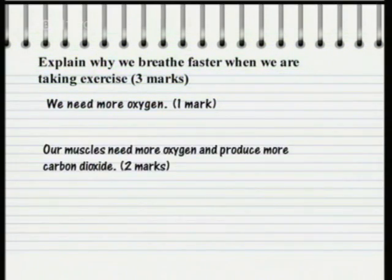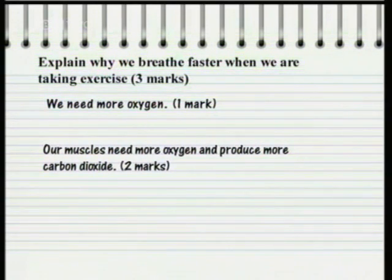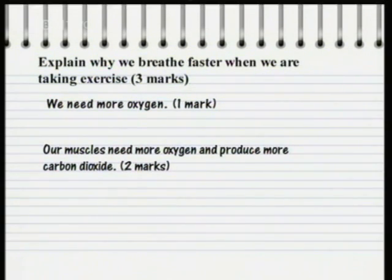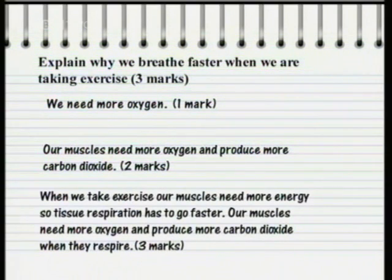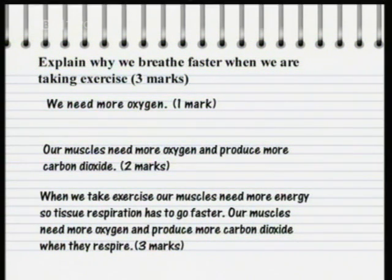Our muscles need more oxygen and produce more carbon dioxide — that contains 2 facts, so that would get 2 marks. My full answer would be: when we take exercise our muscles need more energy, so tissue respiration has to go faster. Our muscles need more oxygen and produce more carbon dioxide when they respire. That would get 3 marks.